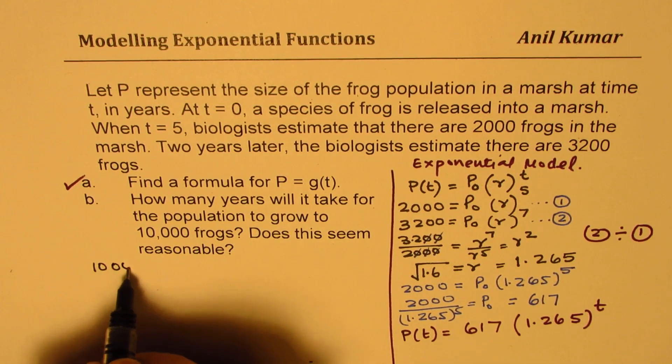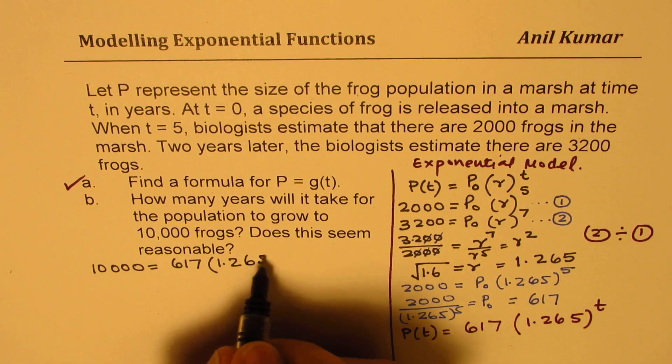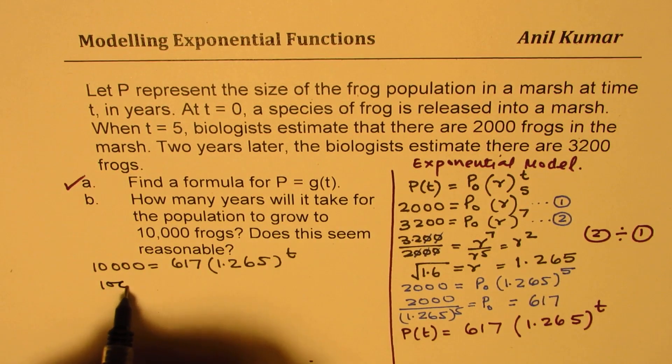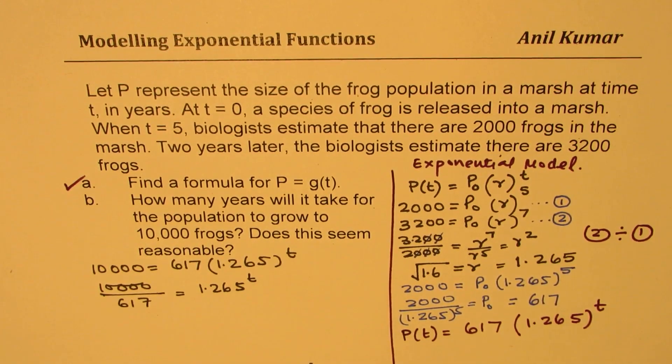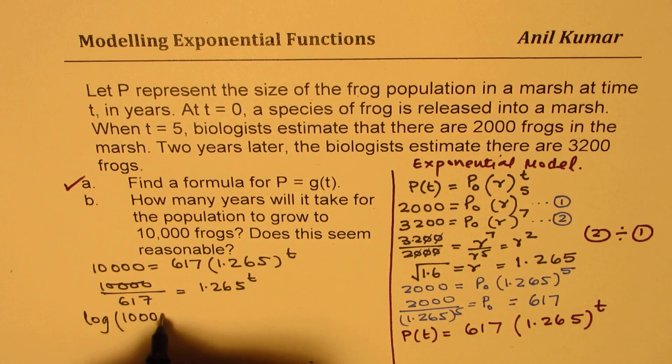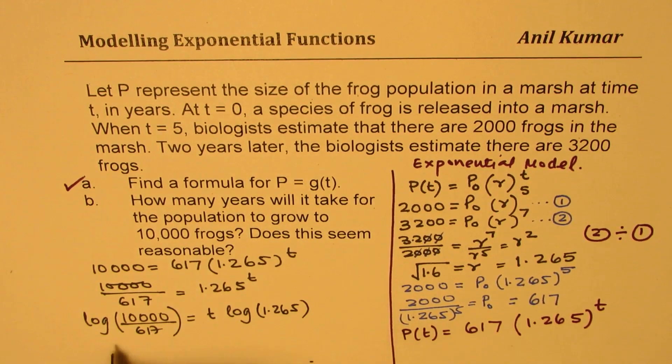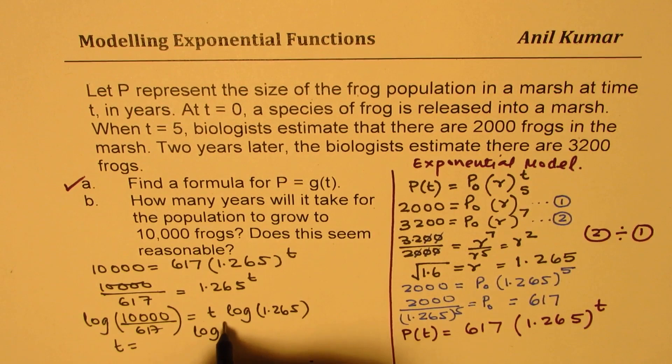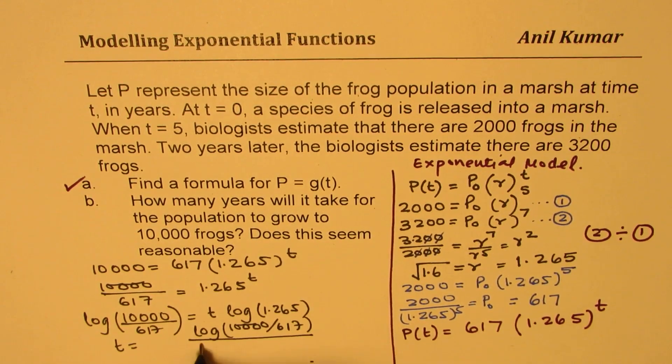So 10,000 is equal to 617 times 1.265 to the power of t. So we'll divide by 617. So 10,000 divided by 617 equals 1.265 to the power of t. Now we can take log both sides and then solve, right? So we get log of 10,000 over 617 equals t times log of 1.265. So t is equal to log of 10,000 divided by 617 over log of 1.265, correct? Let's find this answer.